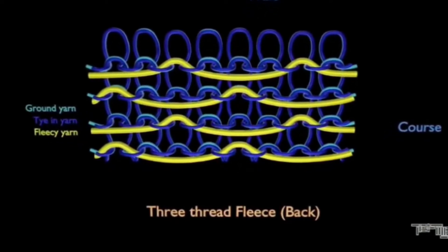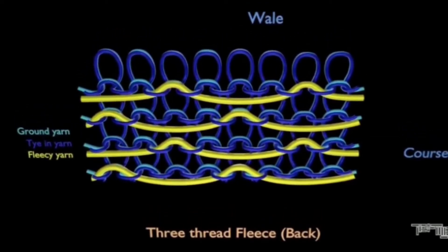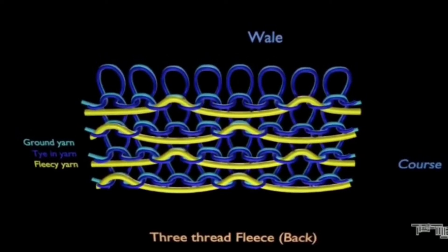Let's check the three yarns. The first yarn is the backing or fleece yarn. The fleece yarn is normally coarse spun and low twist yarn.